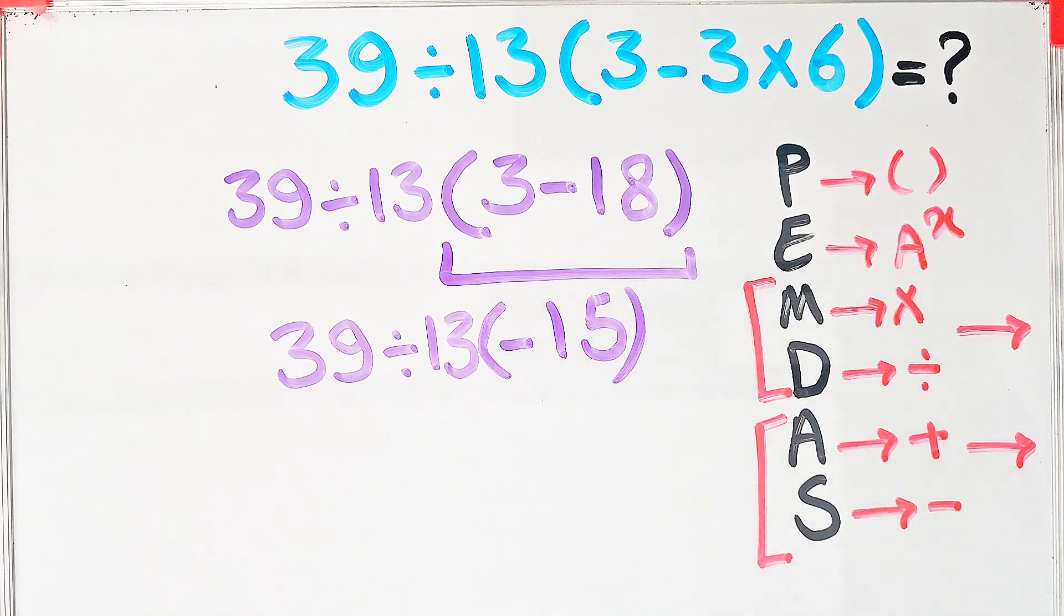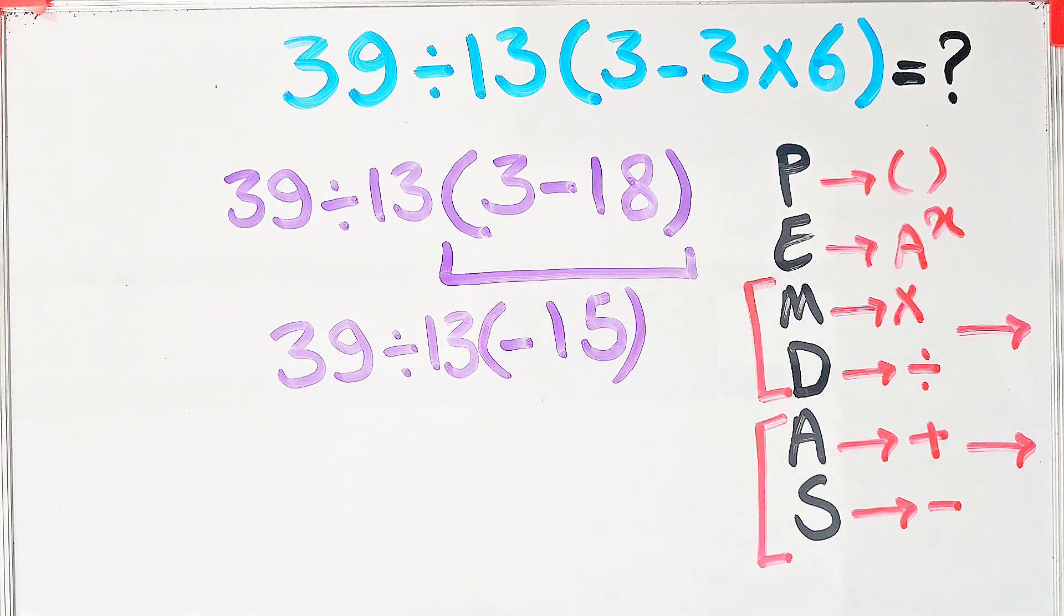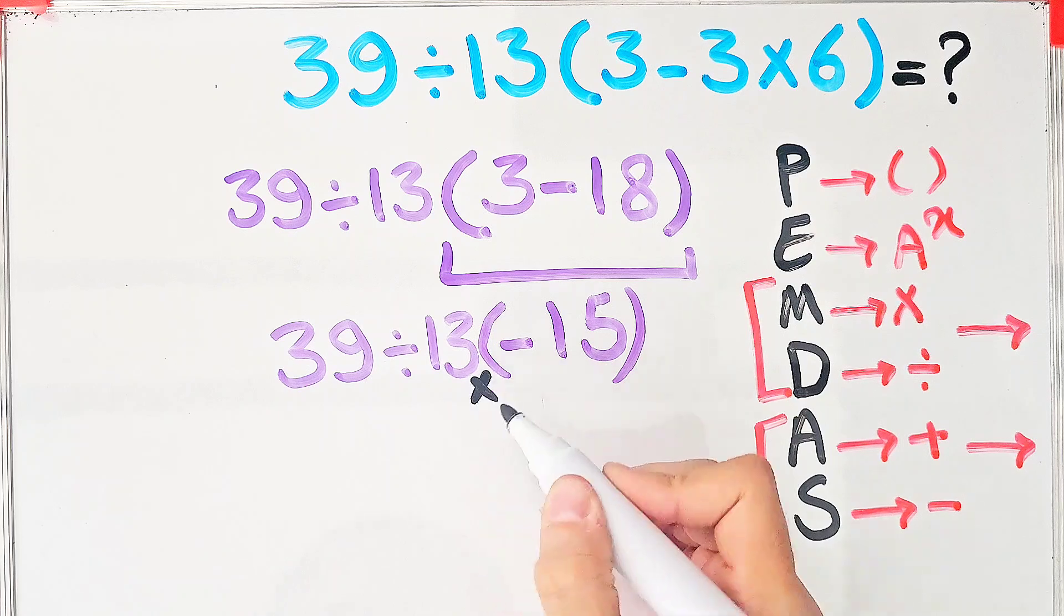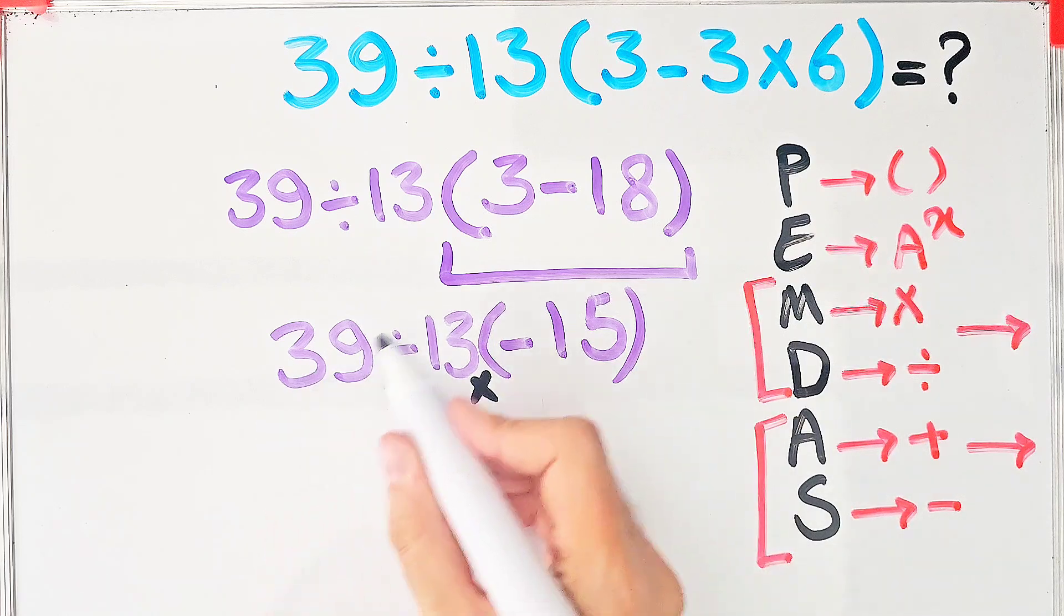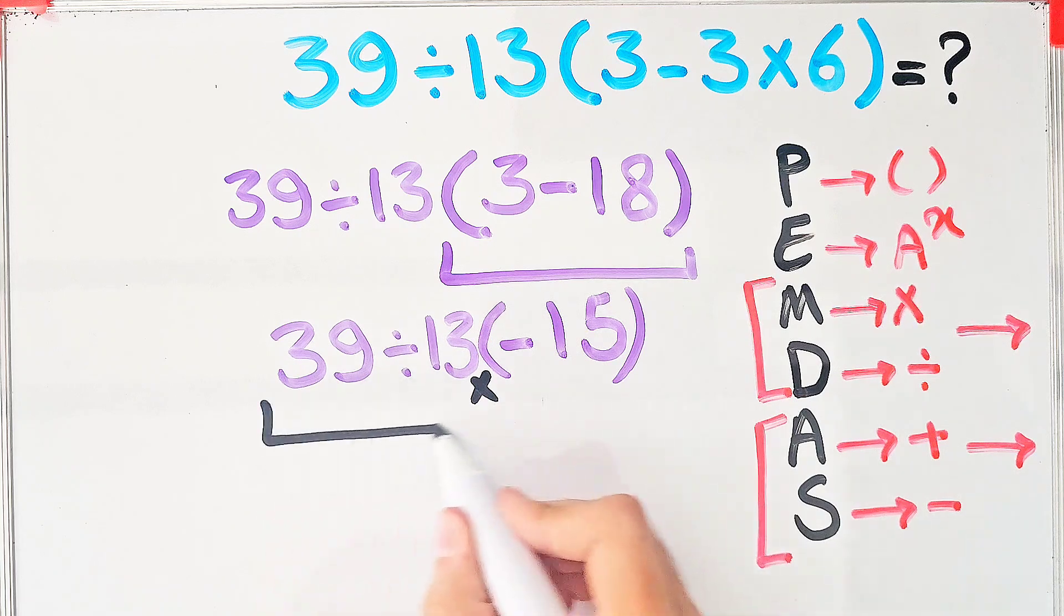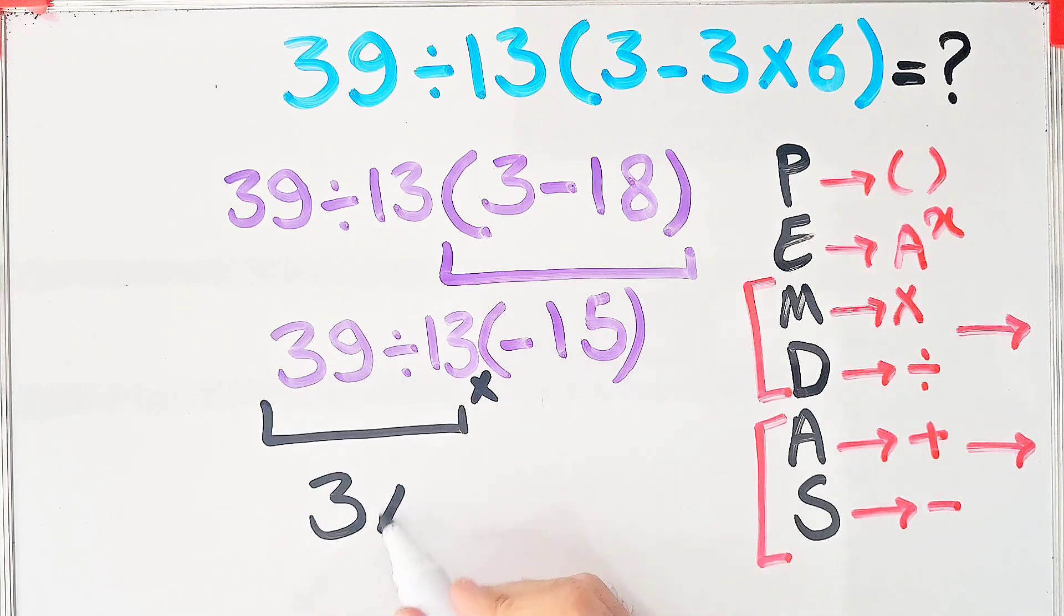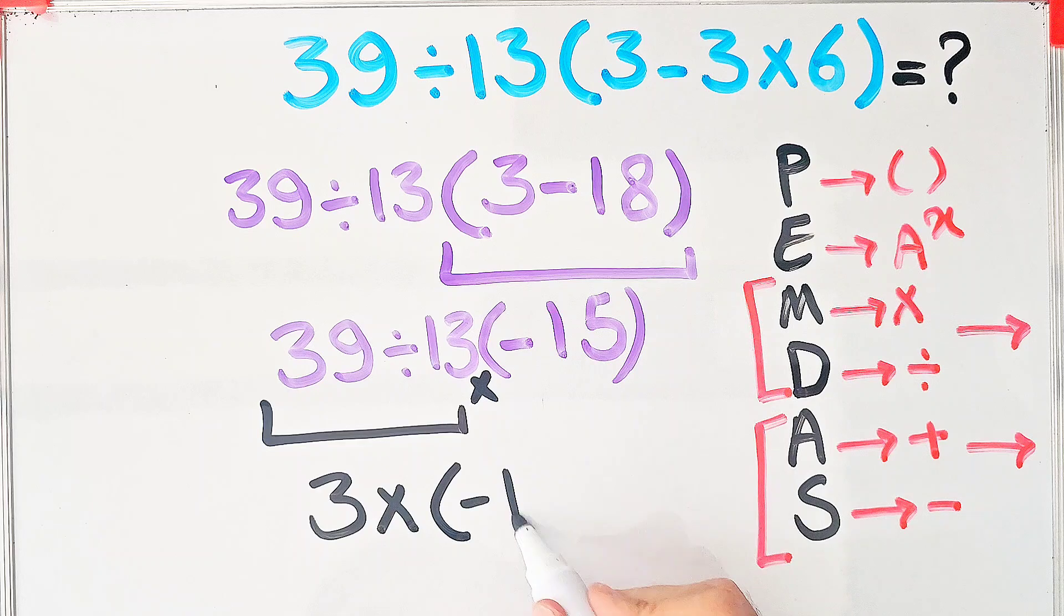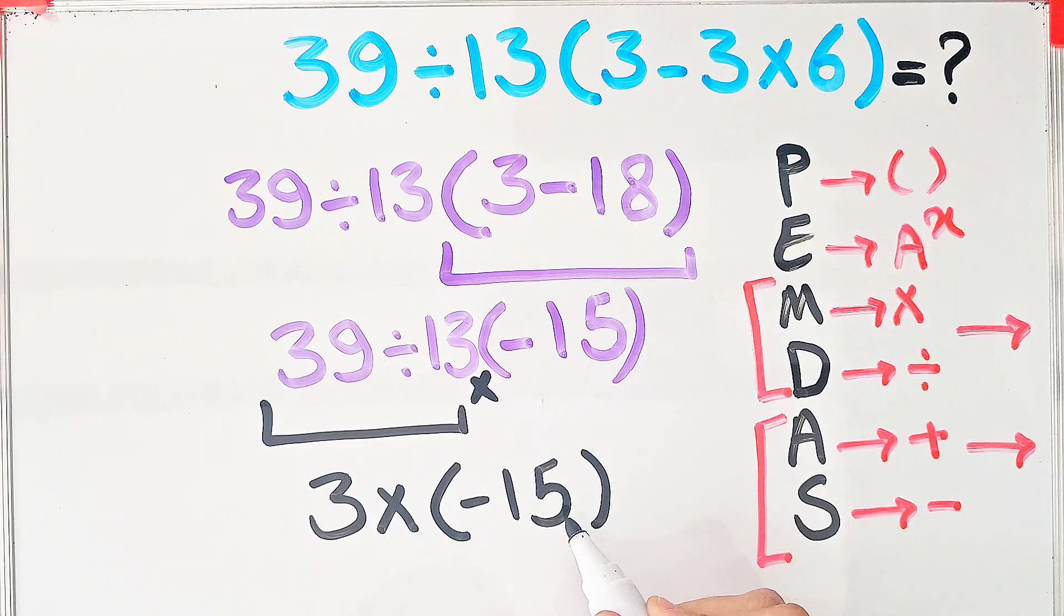In this step, because we have division and multiplication, and multiplication and division have the same level of priority, we start from the left and simplify the question. 39 divided by 13 equals 3, and 3 times negative 15 equals negative 45.